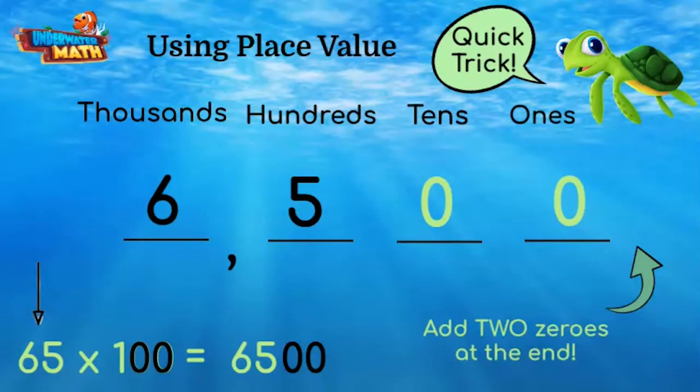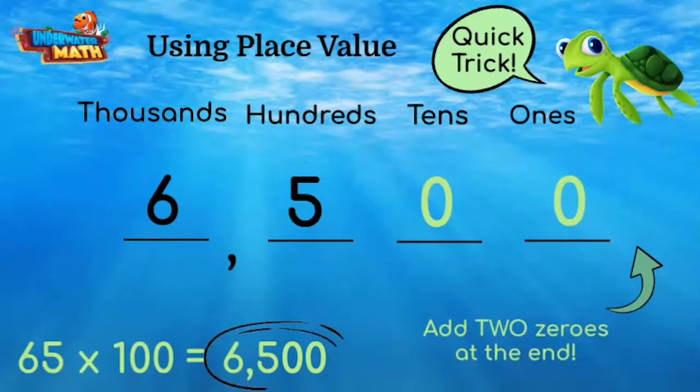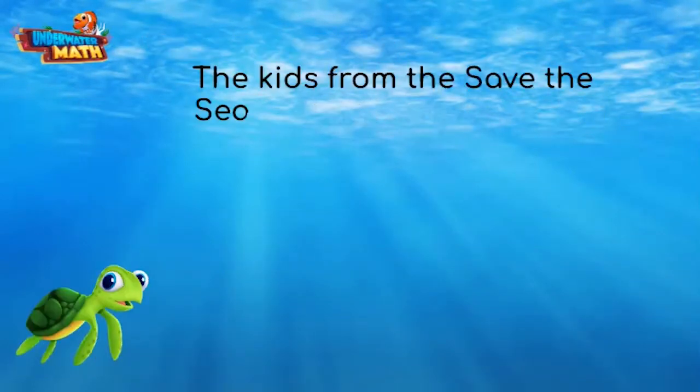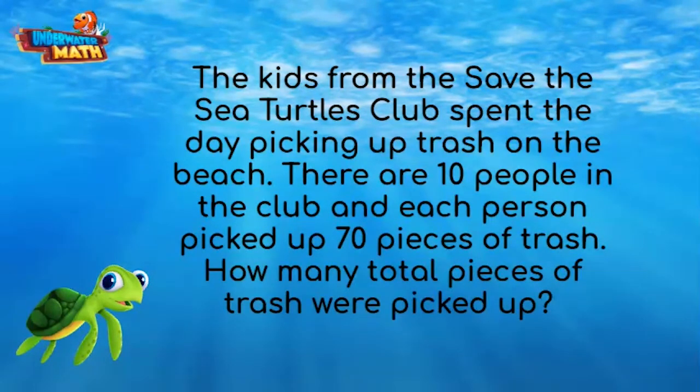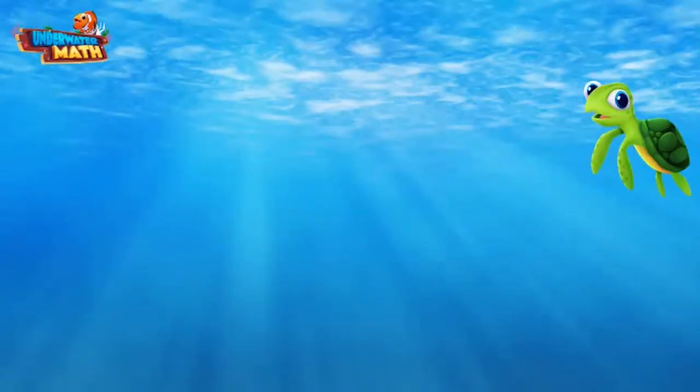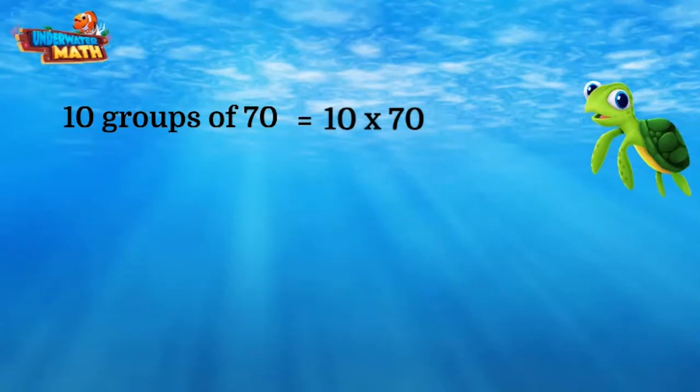Let's put our tricks to use with these word problems. The kids from the Save the Sea Turtles club spent the day picking up trash on the beach. There are 10 people in the club and each person picked up 70 pieces of trash. How many total pieces of trash were picked up? With 10 people in the club and 70 pieces of trash per person, we can write our multiplication problem out like this.